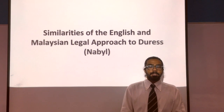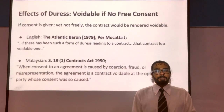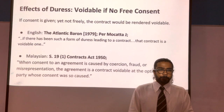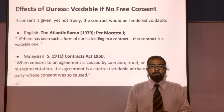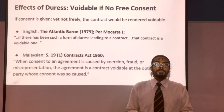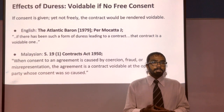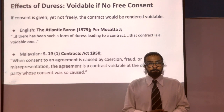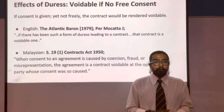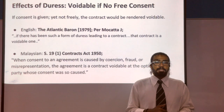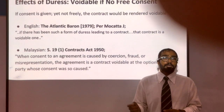I will now examine the similarities between the English and Malaysian legal approach to duress. The first similarity is the effect of duress and the requirement of free consent. If consent is given but not freely, although the contract would come into existence, it would be rendered voidable at the option of the innocent party. This is seen in the obiter of the English case of Atlantic Baron 1979, where Justice Makota stated that if there has been such a form of duress leading to a contract, that contract is avoidable.